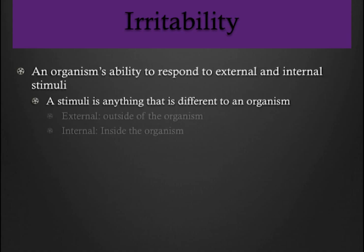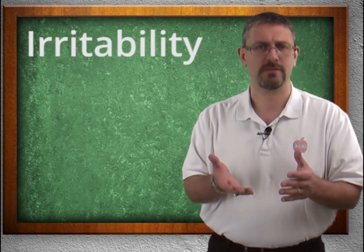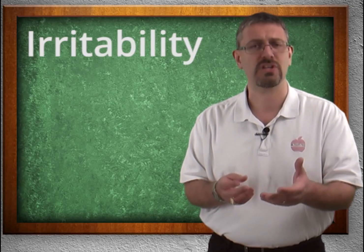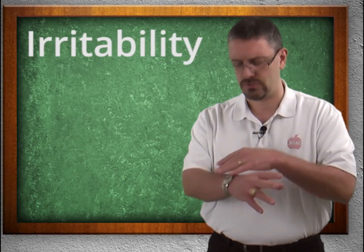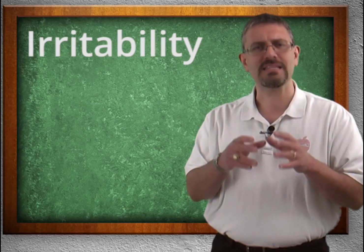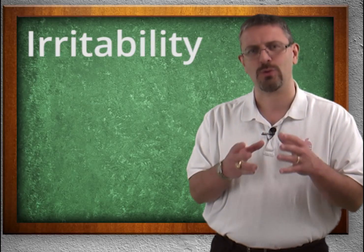This environment can be either internal or external. For example, an external change in the environment — say a temperature change. Let's say that winter's coming and it's getting colder; you react to that stimulus. If it is a hot day, you react to that stimulus. If a bug lands on your arm, you react to that stimulus. This is a change in your external environment.